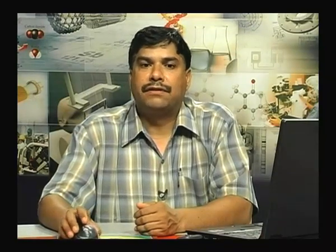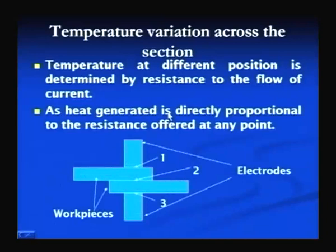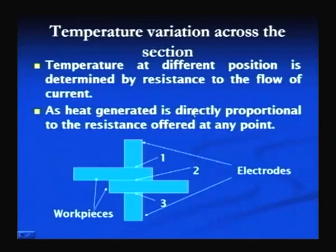The role of current and time is very important in generation of heat. When flow of current takes place through the interface, the temperature varies across the section of the plate being welded. The temperature at different positions is found different and is mainly determined by the resistance to the flow of current in the different zones. Heat generated is directly proportional to the resistance offered by any point in the section being welded, and accordingly the temperature of that particular zone is determined.